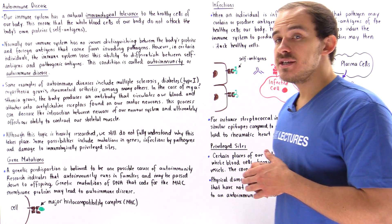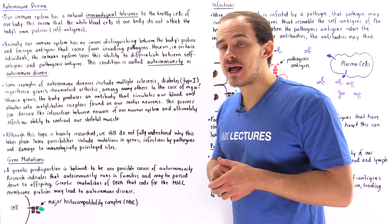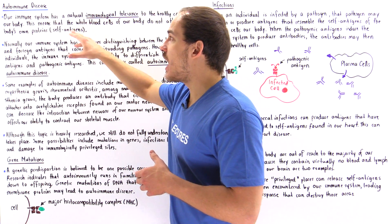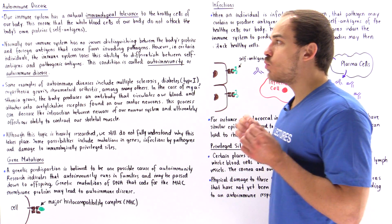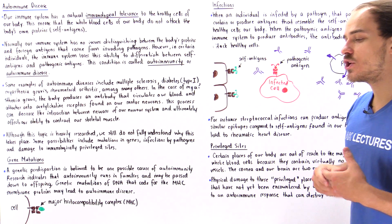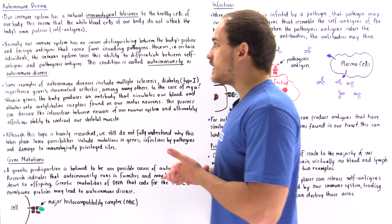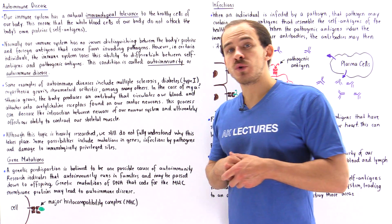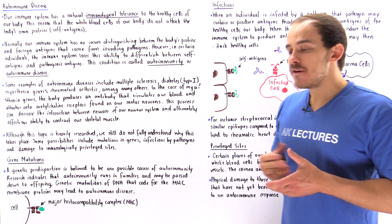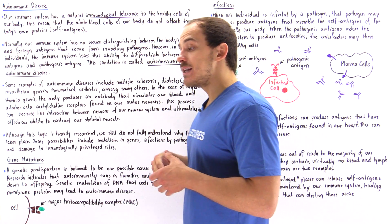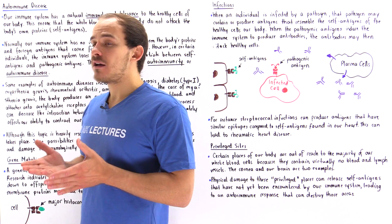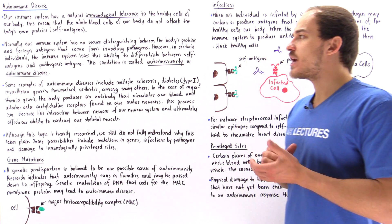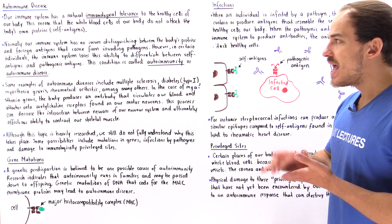These healthy cells display their antigens to white blood cells. When a white blood cell sees a self-antigen on a healthy cell, it will not attack that healthy cell. So under normal and healthy conditions, our immune system has no problem distinguishing between these self-antigens found on healthy cells and pathogenic antigens found on infected cells or on invading pathogens such as bacterial cells.